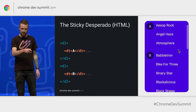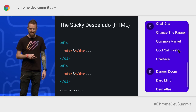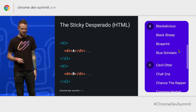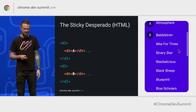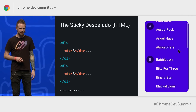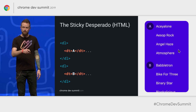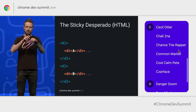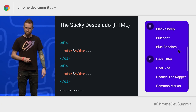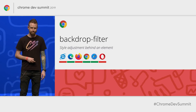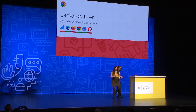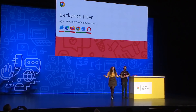My favorite example is sticky desperado — the sticky element looks really desperate to hang out with its friends. The only difference here is the HTML: I have a display grid that went sideways, and it's still the sticky slide as we saw before. All these demos are going to be available at the link we share, so you can use them for your navigations.